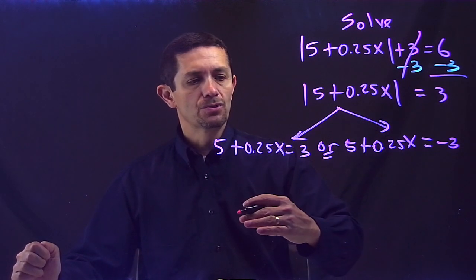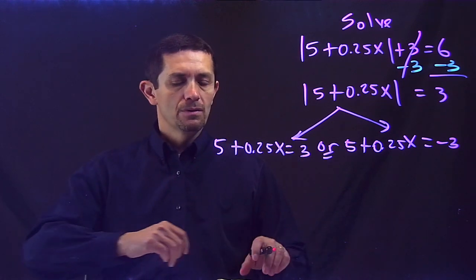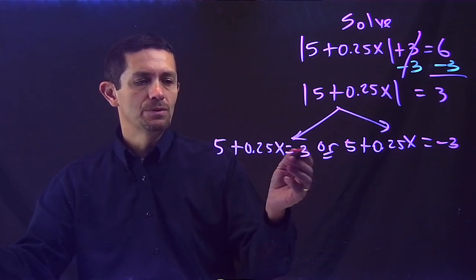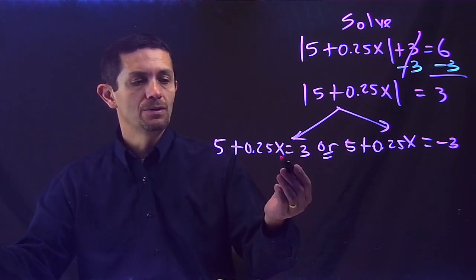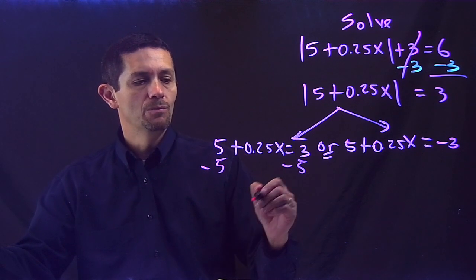Now after that, I just need to solve each equation by itself, and that will be my final solution. So let's solve here on this side first. So I have 5 plus 0.25x equals 3. I need to leave the x by itself, so I got to cancel the 5 on both sides.